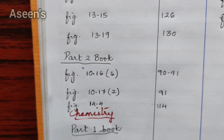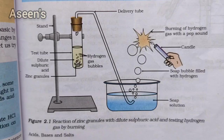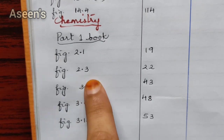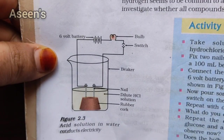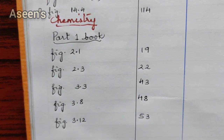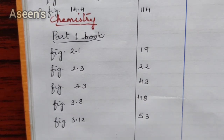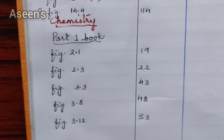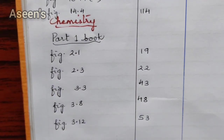For chemistry diagrams from Part 1 book: Figure 2.1 on page number 19; Figure 2.3 on page number 22; Figure 3.2 on page number 43; Figure 3.8 on page number 48; and the last one, Figure 3.12 on page number 53, which is the electrolytic refining of copper. That covers all chemistry diagrams.